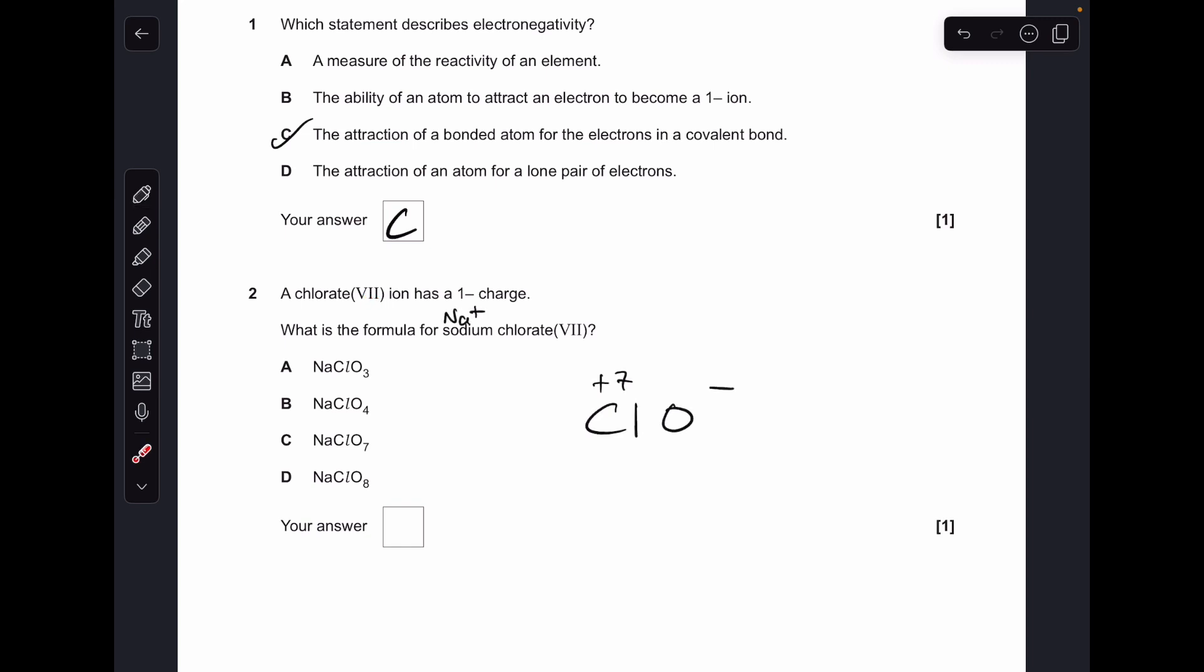Moving on to number two. Chlorate, Roman numeral VII, so chlorate VII ion has a one minus charge. Chlorate will contain chlorine and oxygen, so that's what we know so far. We've got to come up with a formula for sodium chlorate VII. Remember sodium is a one plus ion, so basically how many O's at minus two each in terms of oxidation number do we need to leave a one minus charge when it's together with a plus seven chlorine? The answer is four. So the formula of sodium chlorate VII is going to be NaClO4, so that's option B.